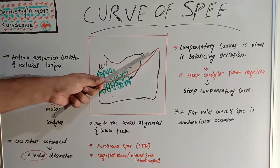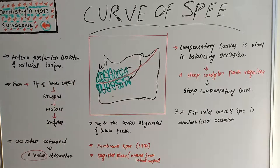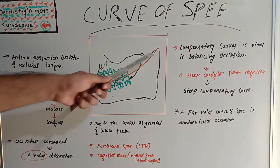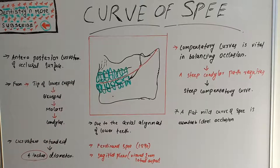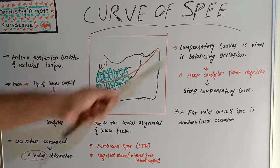We need to keep in mind that to avoid the Christiansen's Phenomena, the curve should be in harmony with the movement of the condyles.